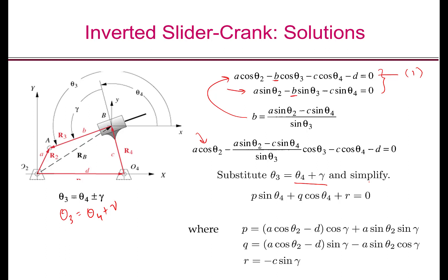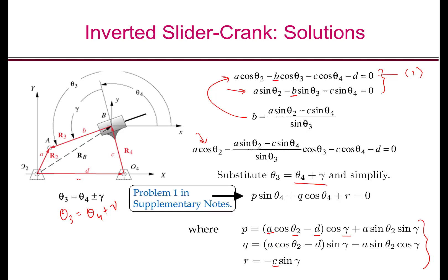Here p, q, r are constants given by specific formulas. They are constants because we know A, theta-2, D, gamma, and C — they are all constants. This equation is of the form of Problem 1 in the supplementary notes, so we know how to solve it directly for theta-4. Once we obtain theta-4, we get theta-3 from the relation theta-3 equals theta-4 plus gamma. Once we have theta-3 and theta-4, we substitute back to get B. There will be two solutions for theta-4, hence two solutions for theta-3, and hence two solutions for B.